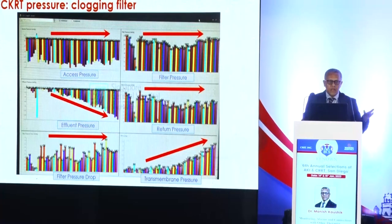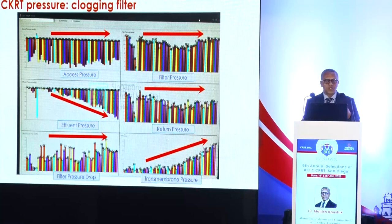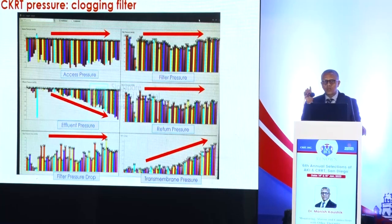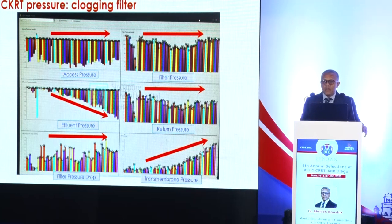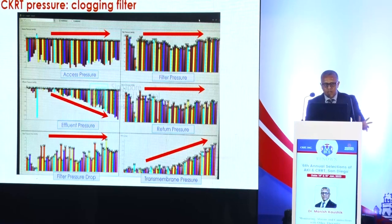In our unit, we use collected data to draw pressure graphs. When a filter is clotting, reviewing these graphs can reveal the likely mechanism of filter failure. This is a typical graph of a clogging filter: progressive negative effluent pressure, positive transmembrane pressure, but filter pressure drop remains almost the same. For this type of filter, changing anticoagulation may not improve filter life. What I would change is the modality — if doing a very high convective dose, I would shift some of it to a diffusive dose to see whether I can influence these pressures.